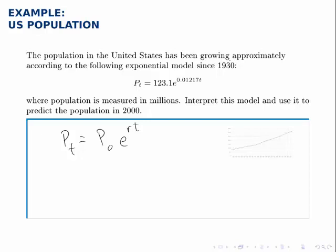We're told that this model is since 1930, so 1930 is year zero according to this model.